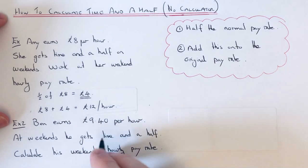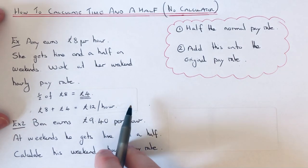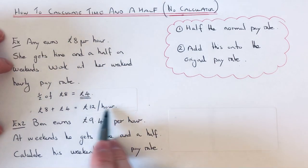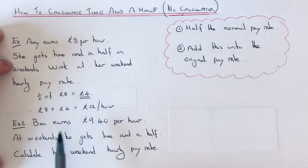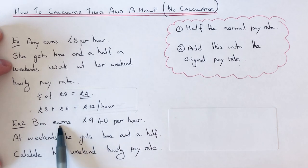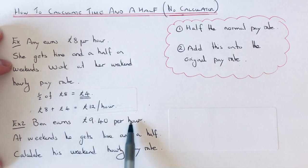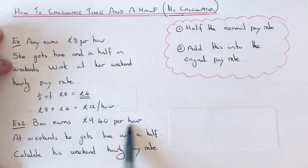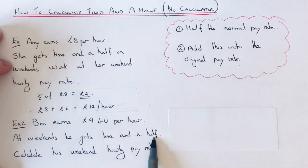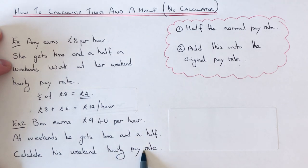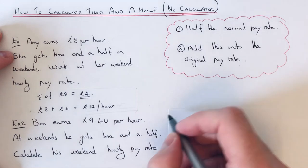So twelve pound is her new pay rate for the weekend — that's your time and a half pay rate. Now let's have a look at example two. Ben earns nine pound forty per hour, so again this is your normal pay rate, and at weekends he gets time and a half. We need to calculate his weekend hourly pay rate.